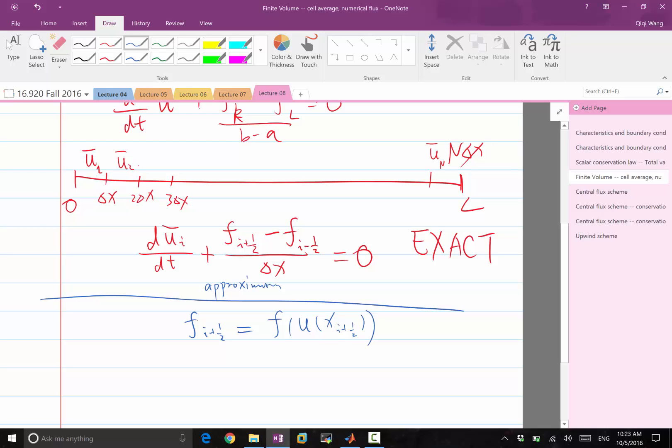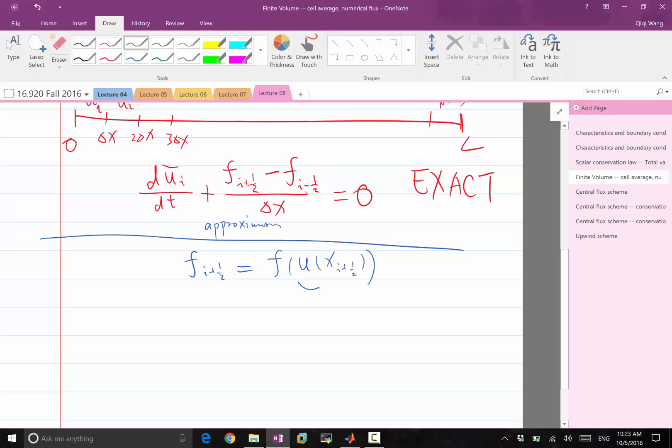In finite volume, we only keep, we only remember the cell averages. So we have to do some kind of interpolation. So this is what we have to interpolate.